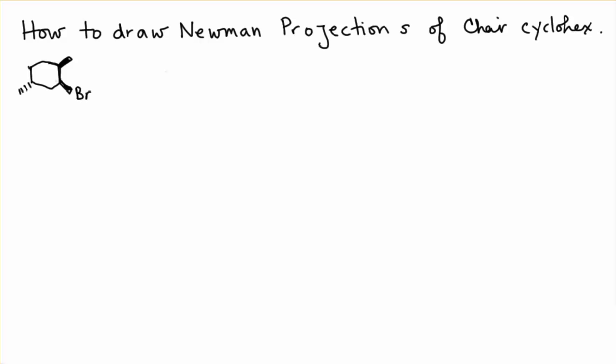Alright, in this video I'm going to show you how to draw Newman projections of chair cyclohexane. Over here we have 2-bromo-1,4-dimethyl cyclohexane.